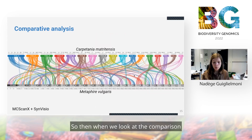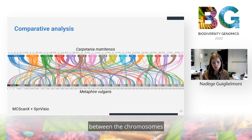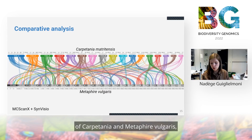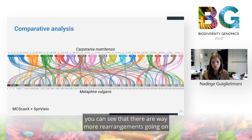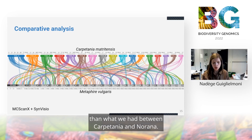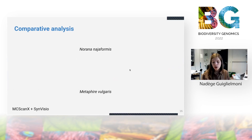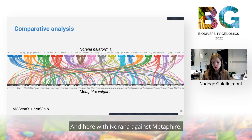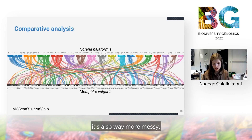When we look at the comparison between the chromosomes of Carpetania and Metaphoria vulgaris, there are far more rearrangements than what we observed between Carpetania and Norana. And comparing Norana against Metaphoria is also much messier.